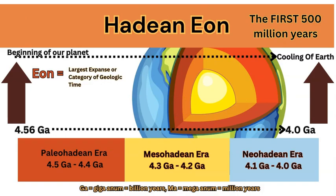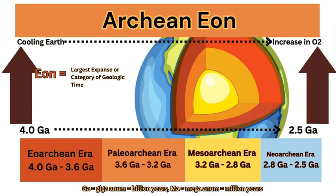The first half a billion years was the Hadean Eon, split into three separate eras: the Paleo, Meso and Neo. Meso means middle, Paleo means old, and Neo means new. The divisions are based on when they fit within the larger expanse of the Hadean Eon — this is when the Earth was forming and cooling down. The Archean Eon began once the Earth cooled, with the formation of the oceans, the great era of asteroid bombardment, and the collision forming the Moon. It has four eras — Eoarchean, Paleoarchean, Mesoarchean and Neoarchean — spanning about one and a half billion years.